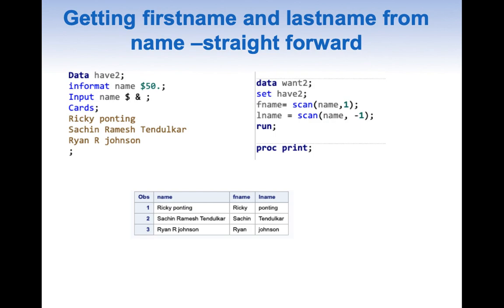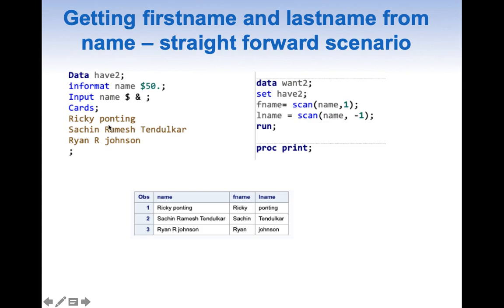Now let us see how we can use this knowledge to extract first and last name. Here we have a dataset with first name and last name, and also records with first name, middle name, and last name, and first name, middle initial, and last name. By using the SCAN function we can easily extract the first name and last name. For first name, SCAN(name, 1) pulls out the first word. For last name, SCAN(name, -1) pulls out the last name very easily. This is the straightforward scenario.